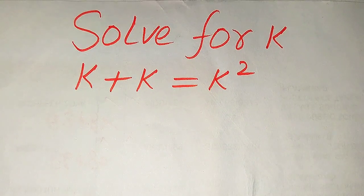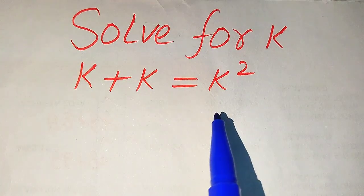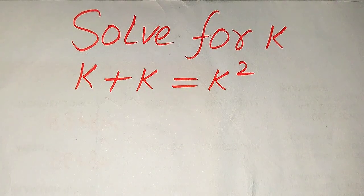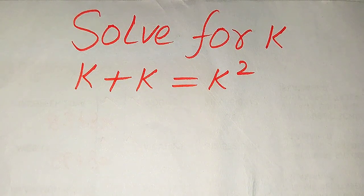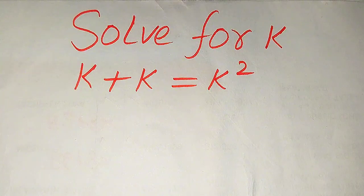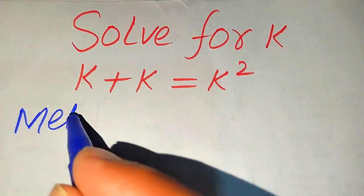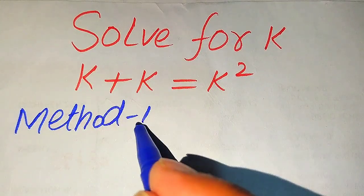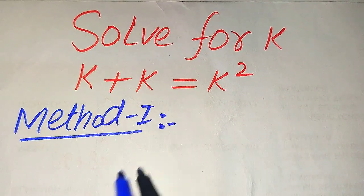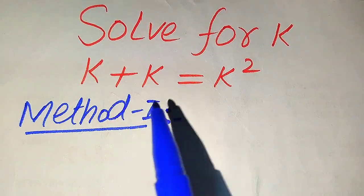Hello everyone. How to solve this problem: for what values of K, if we have K plus K equals K squared? We solve this for all values of K. First we find all the roots of this equation, and at the end we verify which roots are solutions and which are extraneous. We solve this using two methods — please feel free to share any other method in the comments.